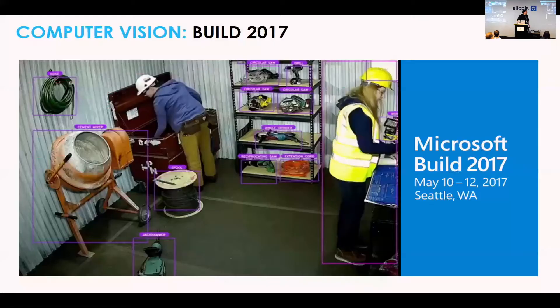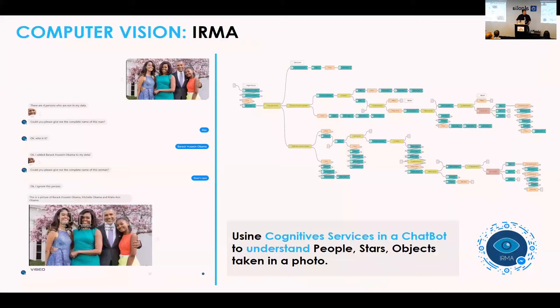At Microsoft Build, there was computer vision. They showed recognizing lots of things in images. So we created a bot: you take a picture with your phone, it recognizes faces, how objects are positioned, and celebrities. The idea is to move that to a simple camera. The flow looks like that, because there are many, many use cases. If you want to test it, it's irma.viseo.net, or use the Facebook Messenger QR code.